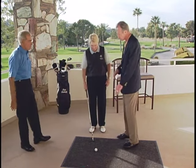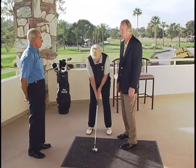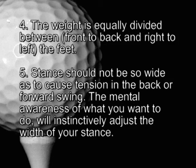Place the club head behind the ball square to the target line. The butt of the shaft is aligned with the center of the body. The body faces the club face squarely. The weight is equally divided between the front and back of the feet, or left and right. The stance should not be so wide as to cause tension in the back or forward swing. The mental awareness of what you want to do will instinctively adjust the width of your stance. Because I really have no idea and I don't want to know what my body is doing. All I want to sense in my body is that it's going along, flowing along with the motion I'm producing with my club, that I don't offer the club's motion any resistance. And I just flow with it.